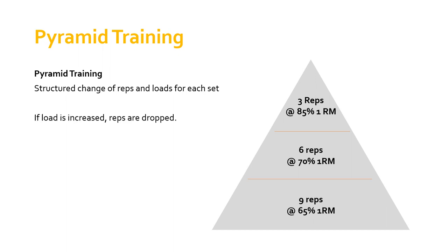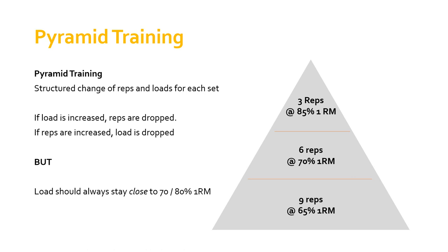Essentially, if the load is increased as we move towards the top of the pyramid, you'll notice we go from 65, 70, to 85 percent of one rep max. The load is increasing while the reps are dropped. If we're coming down from the top of the pyramid, the opposite is true — reps increase from three to six to nine, and the load is dropped. We're playing off the load and the reps against one another. Because we're targeting strength, the load should always stay close to 70 to 80 percent of your one rep max.